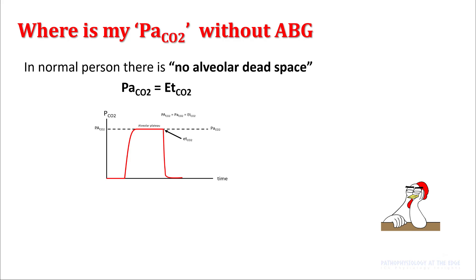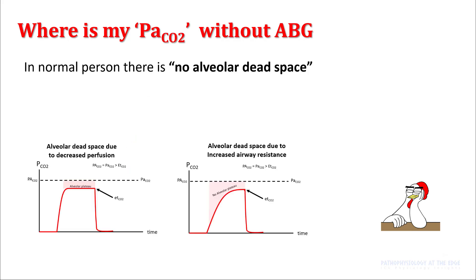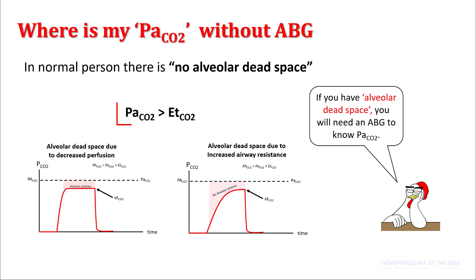In a normal person, there is no alveolar dead space, so your PaCO2 is going to be equal to end-tidal CO2. However, this is not the case if you have alveolar dead space, which can be seen because of two reasons: decreased perfusion or increased airway resistance. In these cases, your PaCO2 will be more than end-tidal CO2, and the magnitude of the difference will depend upon the magnitude of the dead space present.